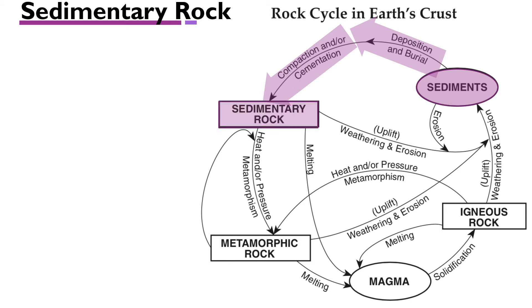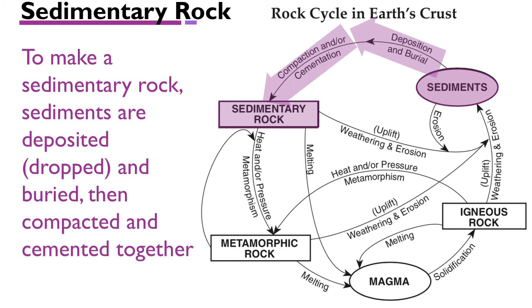And then you end up with a sedimentary rock. This chart is useful because if you follow the ingredients and arrows into the sedimentary rock rectangle, you'll know exactly how the rock formed. To summarize: to make a sedimentary rock, sediments are deposited—dropped—then buried, compacted, and cemented together.